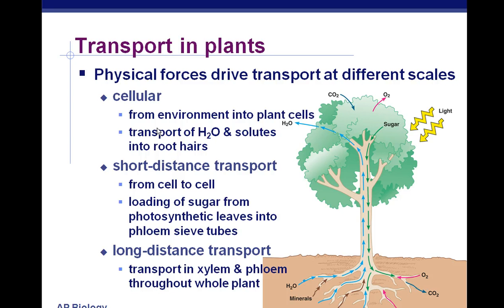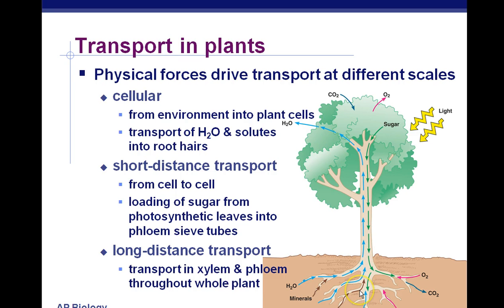Moving on — we have some physical forces that drive transport at different scales. At the very smallest scale is the cellular scale: microscopic transport of water and solutes into the root hairs, which are also microscopic and increase surface area. Then we have short-distance transport from cell to cell, loading sugar from the leaves into the phloem sieve tubes. Remember, the sieve tubes are kept alive by a companion cell, and phloem will take the sugars from the leaves down to the roots to be stored. Then we have long-distance transport — xylem and phloem throughout the whole plant, getting from the leaves to the roots.